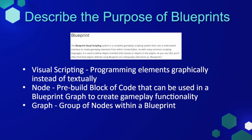As we can see from this definition found in the Unreal Engine documentation, the Blueprint Visual Scripting System is a complete gameplay scripting system that uses a node-based interface to create gameplay elements within Unreal Editor. As with many common scripting languages, it is used to define object-oriented classes or objects in the engine. In UE5, objects defined using Blueprint are colloquially referred to as blueprints.